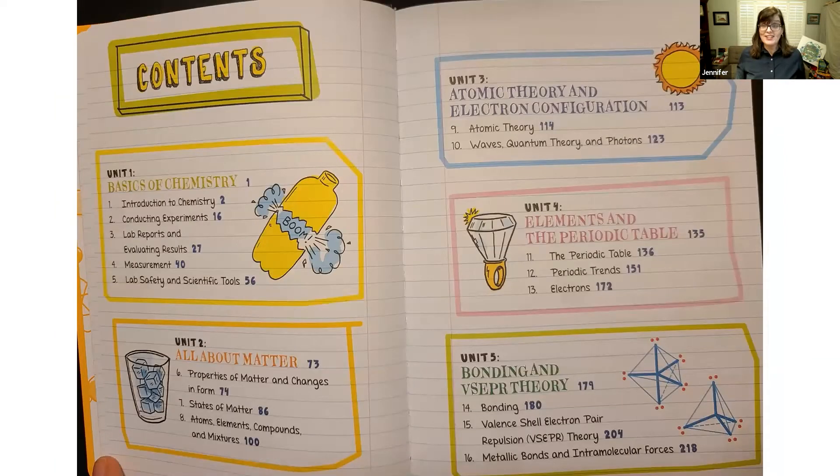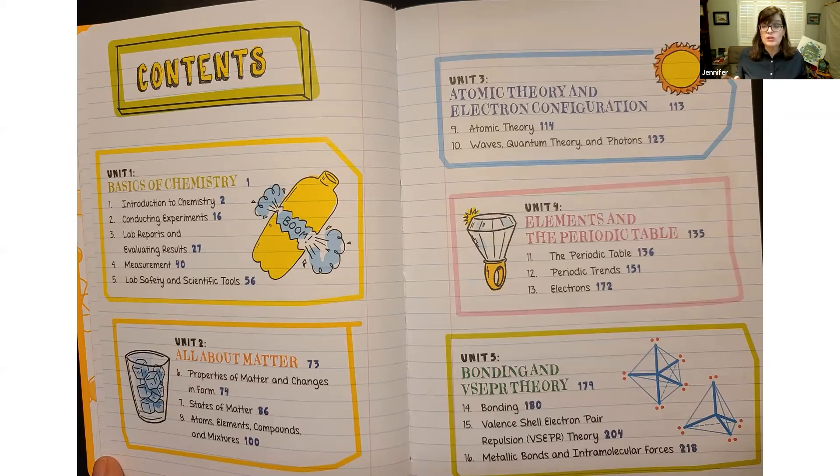Okay, so what topics does it cover? It covers a lot, just like your chemistry class probably does. We have the basics of chemistry, which is introductions, how to do those experiments and write lab reports, and if you have to write lab reports, I'm imagining all your hands are going up, and evaluating results. And then we have scientific tools. And then it jumps right in. It's maybe a little bit of a review for some of you that might have had this earlier. It's all about matter, the states of matter. What's an atom? What's an element? What's a compound? What's a mixture? And all these different things. We have atomic theory and electron configuration.